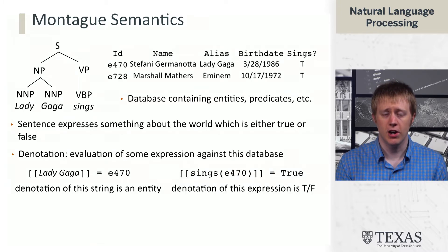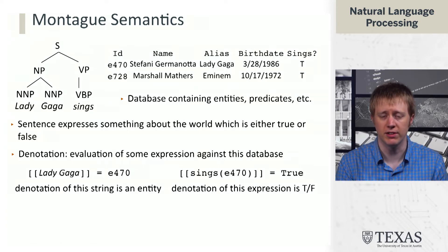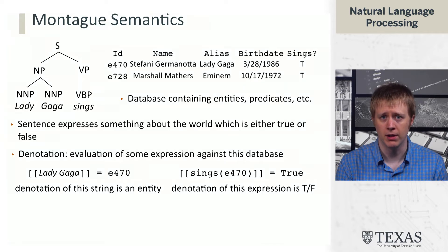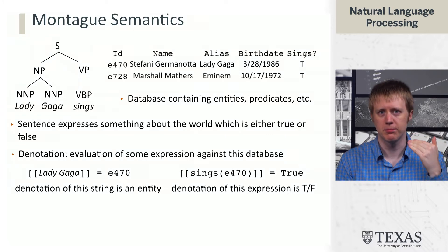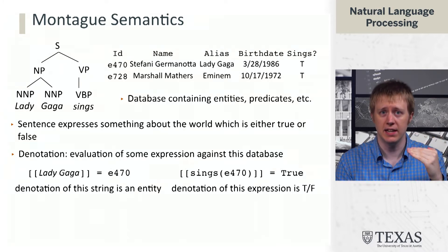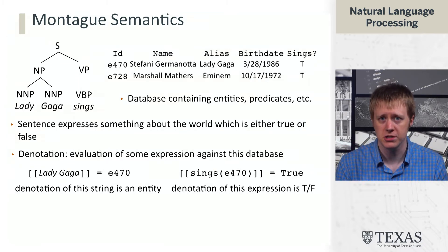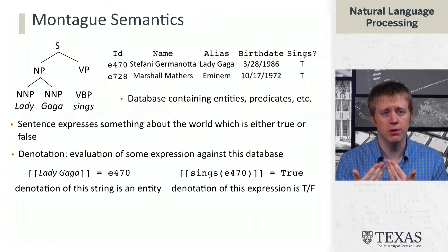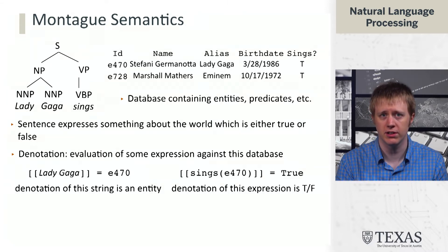We can talk about the denotation of an expression like 'sings(E470)', and this is true because E470 has the sings predicate set to true in the table. So we're going to have to think about how to go from the statement 'Lady Gaga sings' to this formal representation 'sings(E470)'. While this looks fairly straightforward, it's still a conversion that has to happen, and there are cases that can make it tricky.